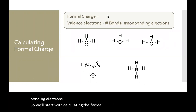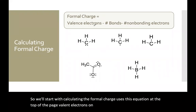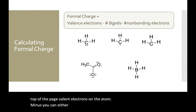Formal charge uses this equation at the top of the page: valence electrons on the atom, minus the number of bonds (or half the bonding electrons), minus the non-bonding electrons.